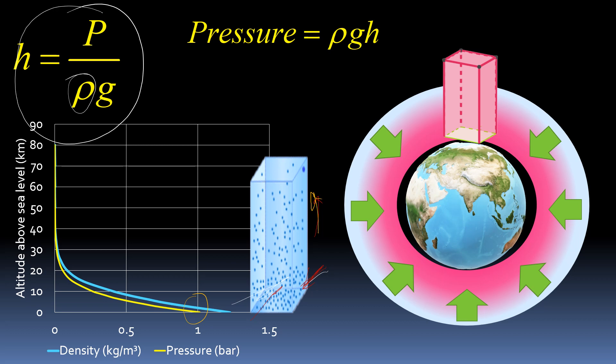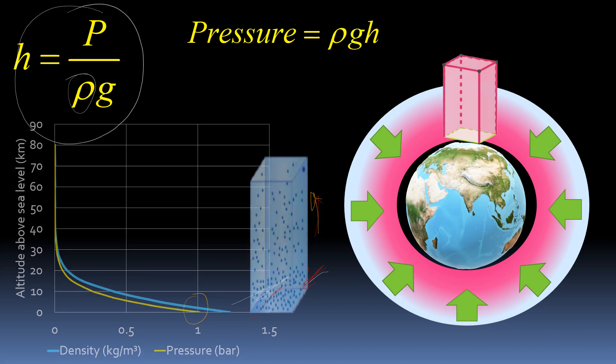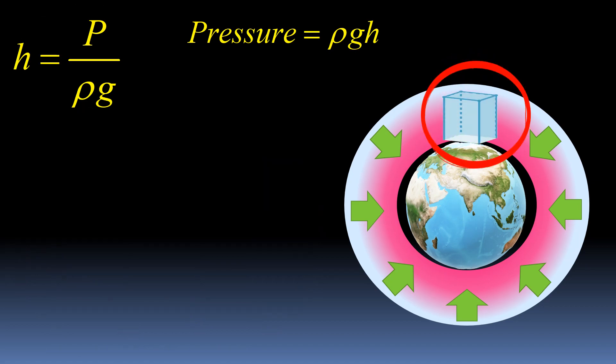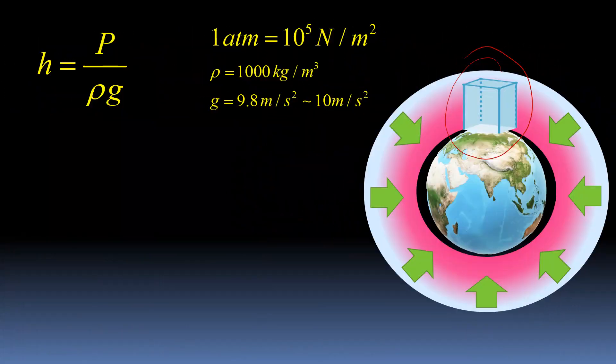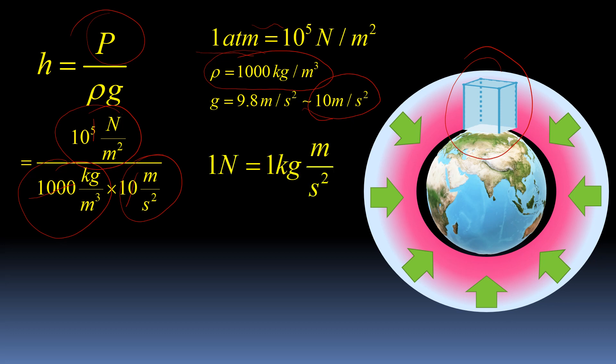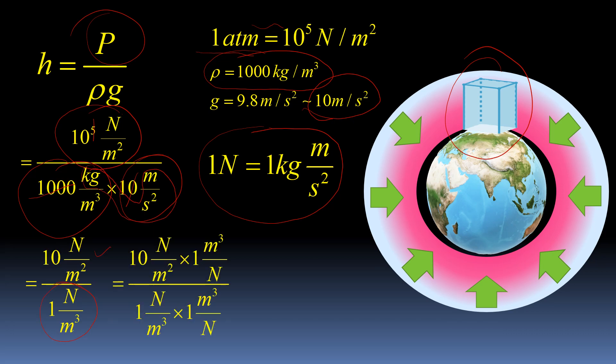So instead of air, let's consider the column is filled with water which is having uniform density. To calculate height of this water column, we know the density of water is 1000 kg per meter cube. We will assume acceleration due to gravity as 10 meter per second square. Now we also know one Newton is one kg per meter second square. Solving this further will give us height equal to 10 meters.